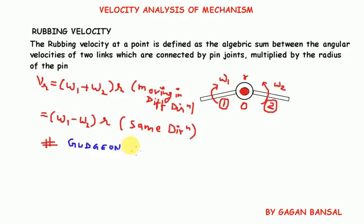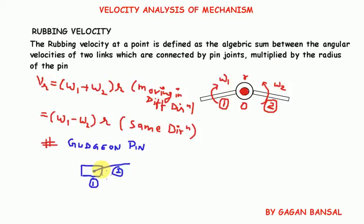Now consider the special case of the gudgeon pin. The gudgeon pin is the pin which joins the slider with the connecting rod. Let link one be the slider, which has sliding motion, and link two be the connecting rod, which has turning motion. The rubbing velocity at point O — that is, at the gudgeon pin — equals omega into r, where omega is the angular velocity of link two and r is the radius of the pin.